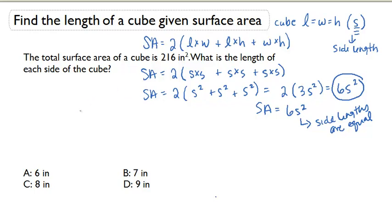So let's solve this problem now. It says the total surface area of a cube is 216 square inches. What is the length of each side of the cube? If we take the 216 and set it equal to 6 times S squared.